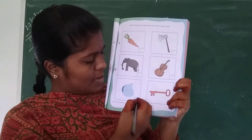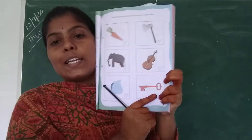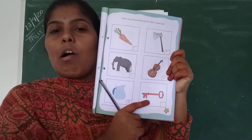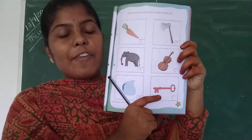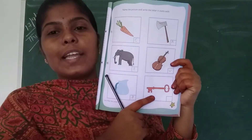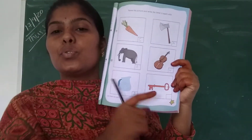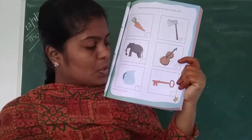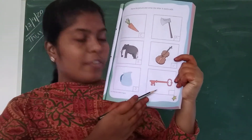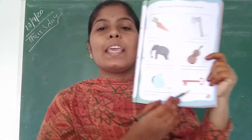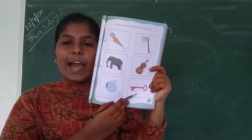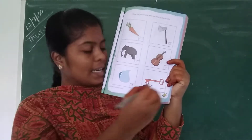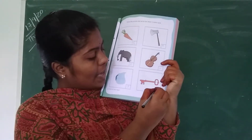Okay children. What is this picture? It is a key. Everyone saw this key, right? It is used to lock the rooms, cupboards and so on. What is the spelling of key? K-E-Y. What is the starting letter of key? K. Write K here.